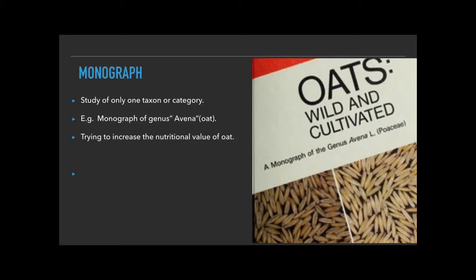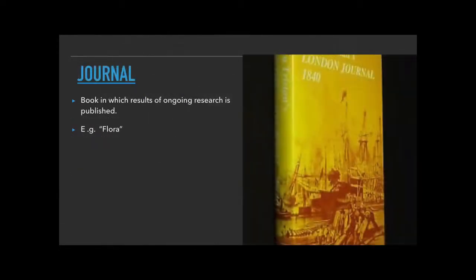Monograph is the study of only one taxon or one taxonomic category, studied for a specific purpose — such as increasing its nutritional value, modifying it, changing genes, or developing a particular taxon. That study or book is called a Monograph.